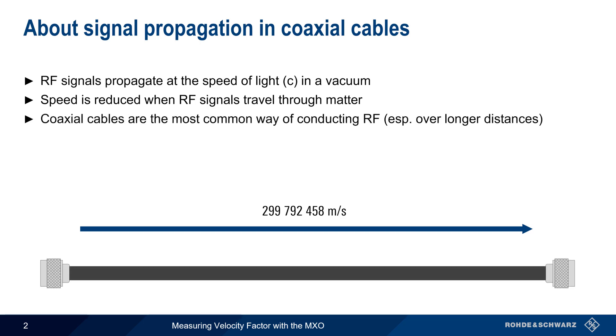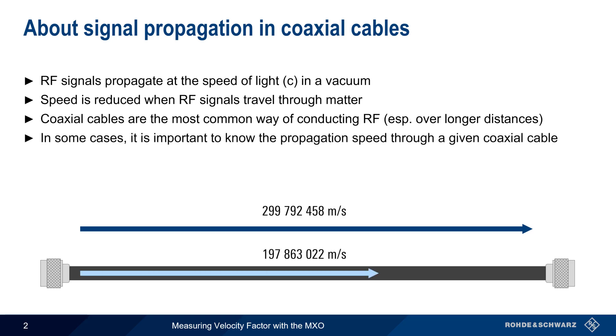Coaxial cable, or coax, is the most common way of conducting radiofrequency signals, particularly when longer distances are involved. For some applications and measurements, it's important to know the speed of propagation through a given coaxial cable. And the speed is normally quantified as the cable's velocity factor.